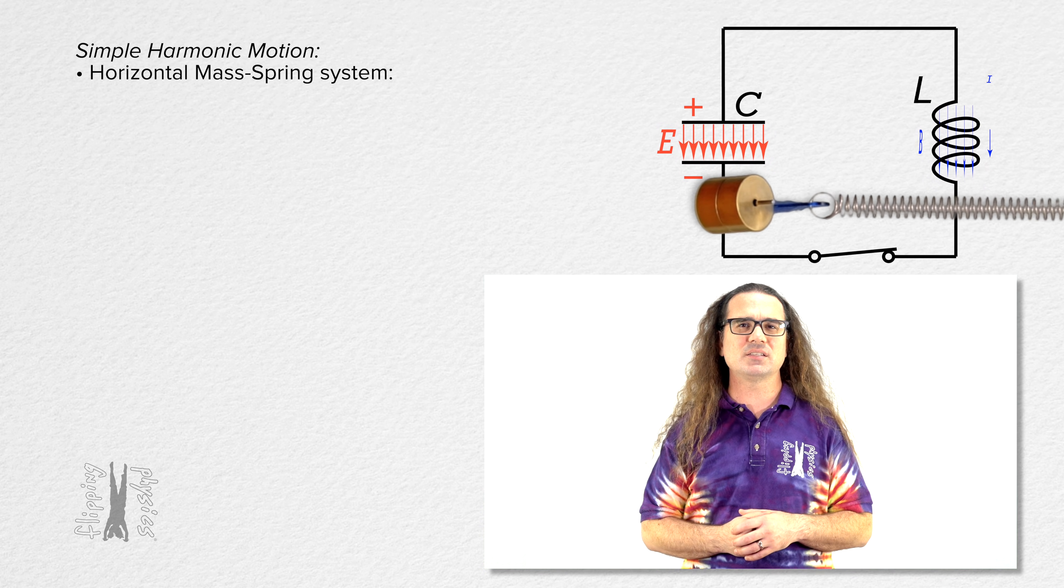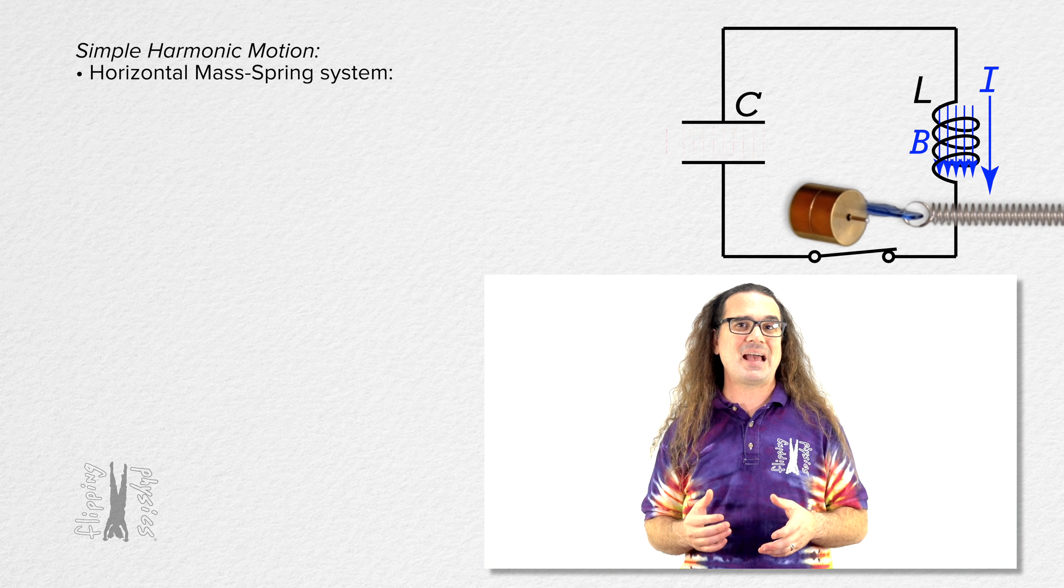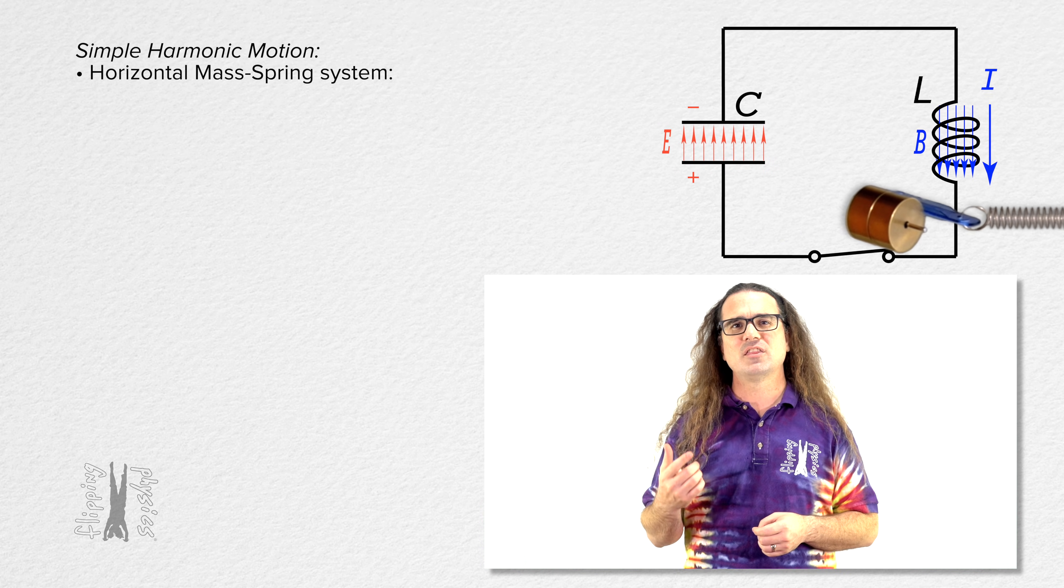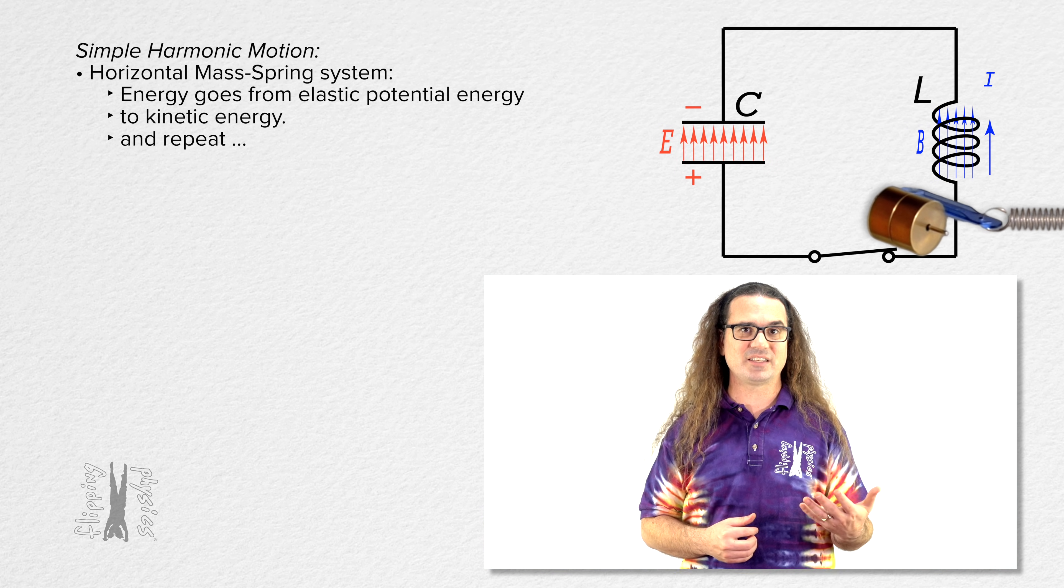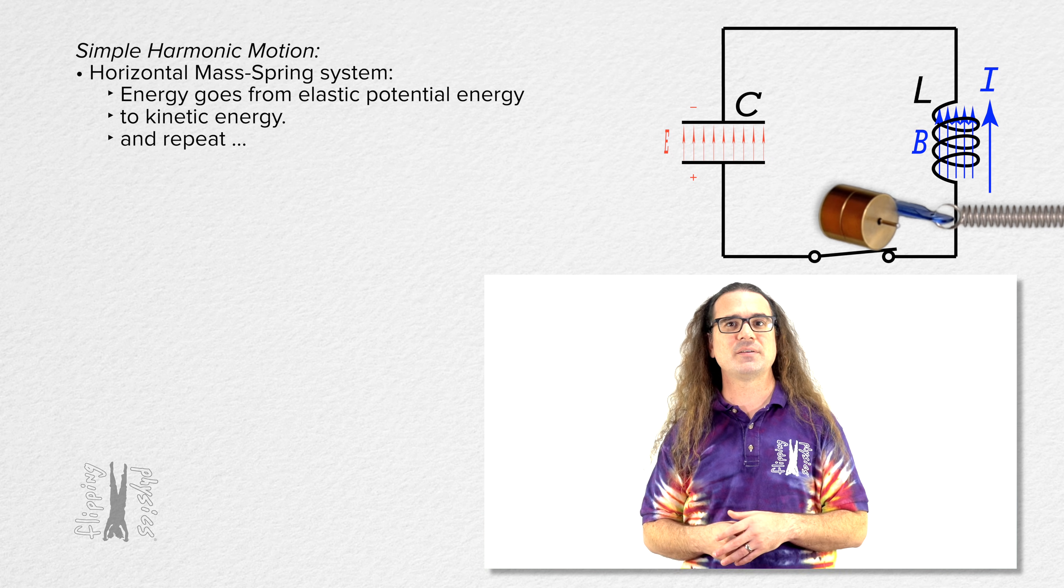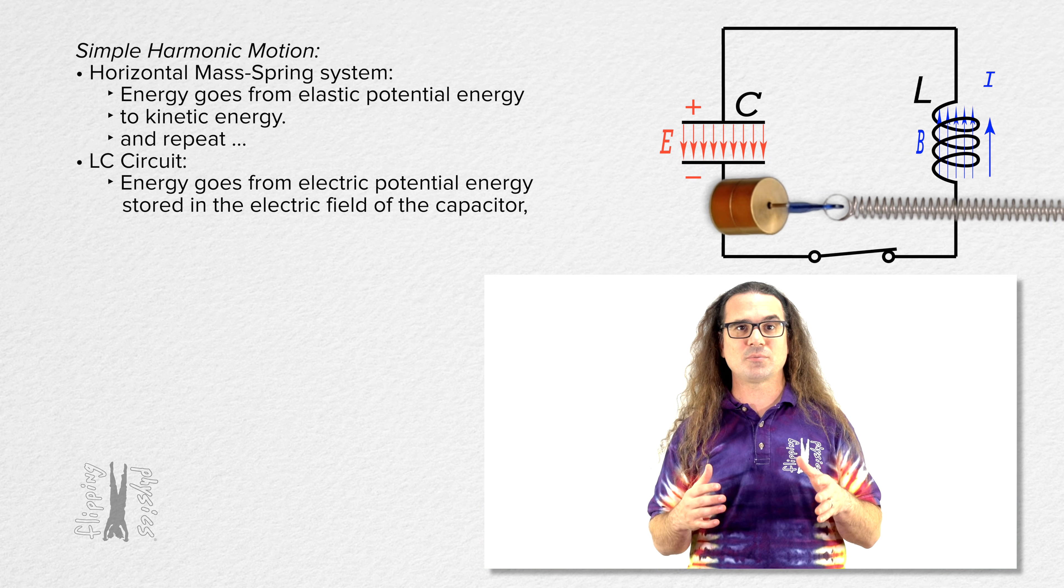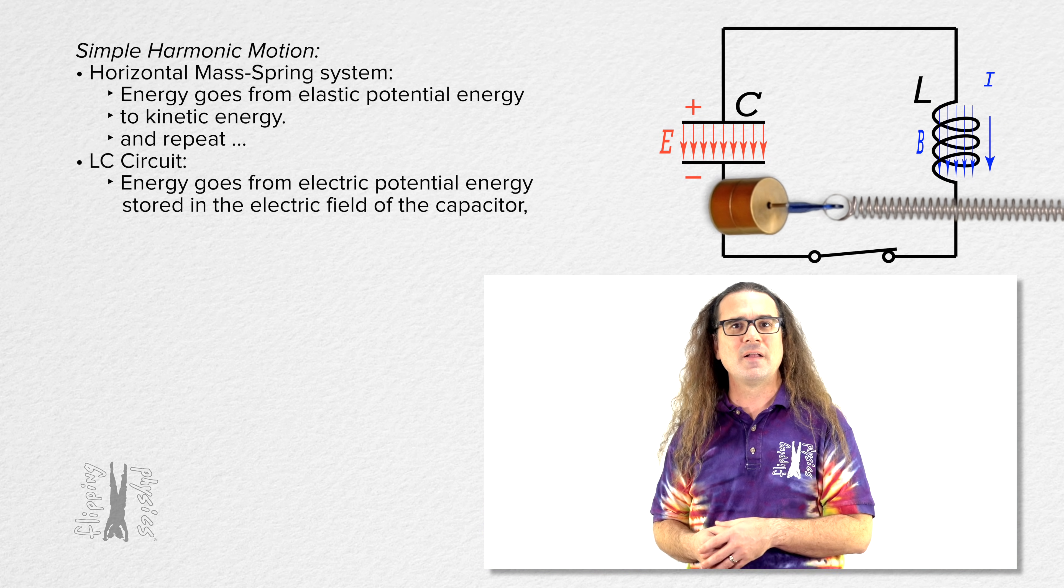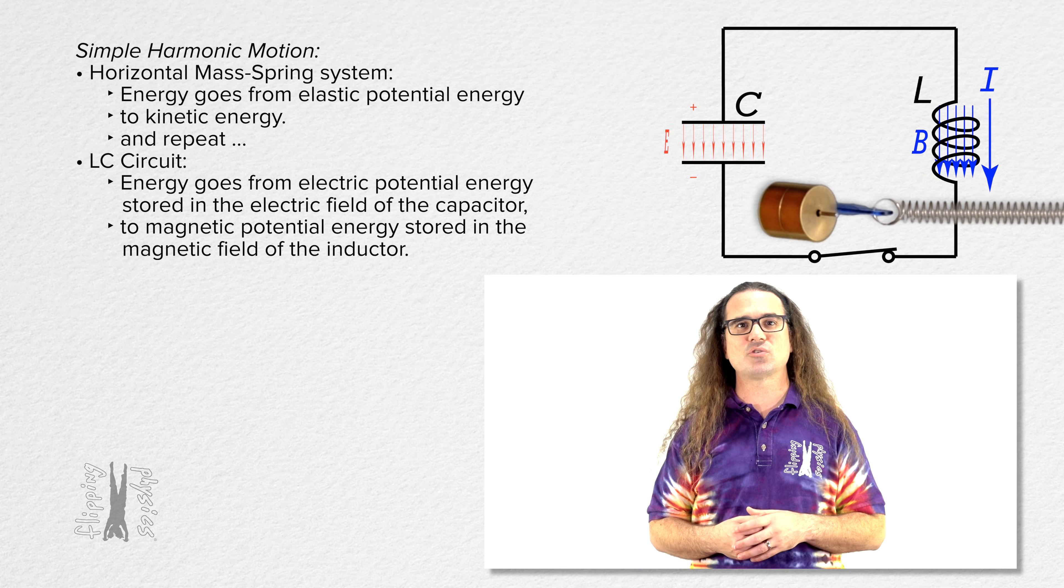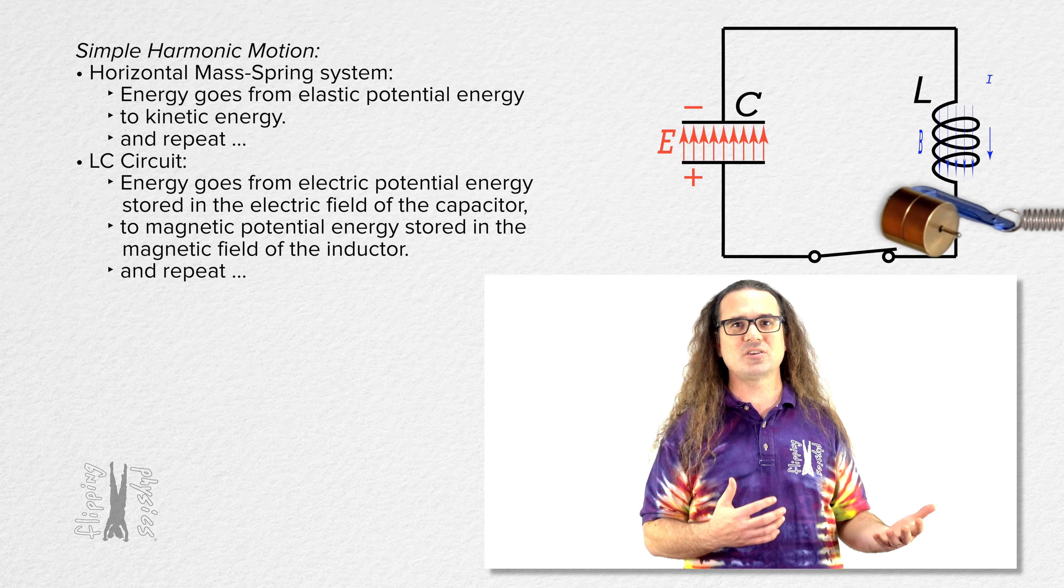A horizontal mass-spring system is a good analogous situation. As the mass oscillates back and forth, the mechanical energy goes from being elastic potential energy to kinetic energy to elastic potential energy to kinetic energy. Just like in the inductor capacitor circuit, the energy in the system goes from being electric potential energy stored in the electric field of the capacitor to magnetic potential energy stored in the magnetic field of the inductor to energy in the capacitor to energy in the inductor.